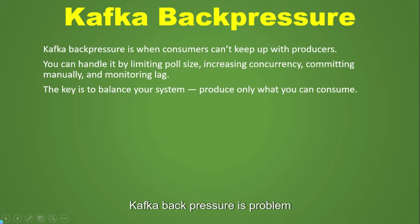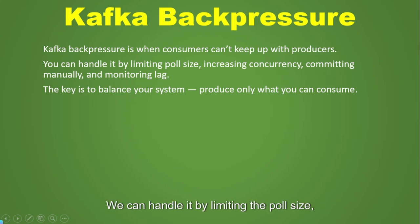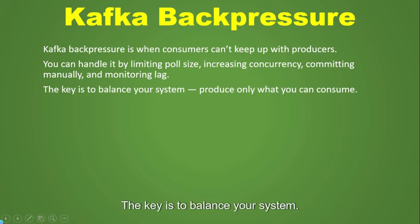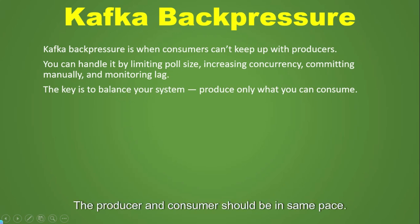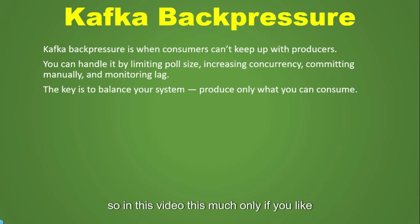In a nutshell, Kafka backpressure is a problem that occurs when the consumer can't keep up with the producer. You can handle it by limiting the poll size, increasing concurrency, committing manually, and monitoring the lag. The key is to balance your system — produce only what you can consume; the producer and consumer should stay in sync. If you liked the video, please subscribe to our channel. Thank you.